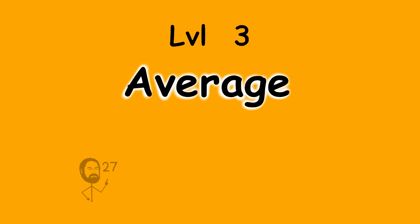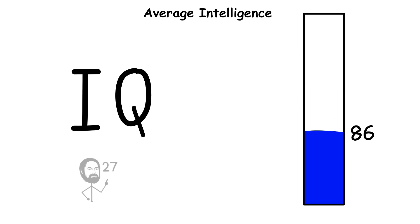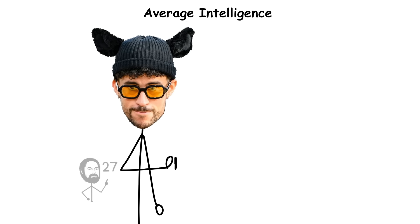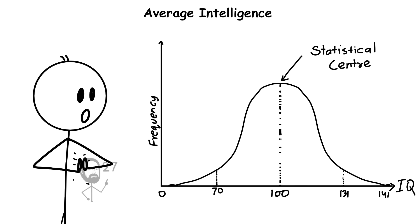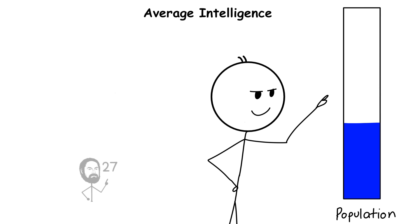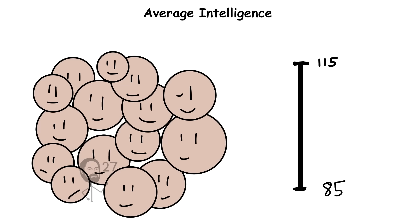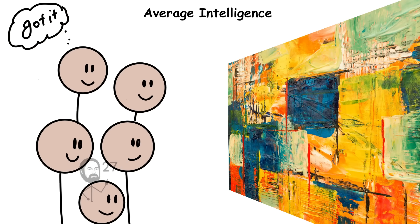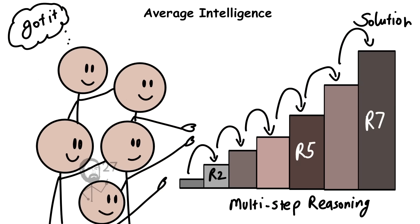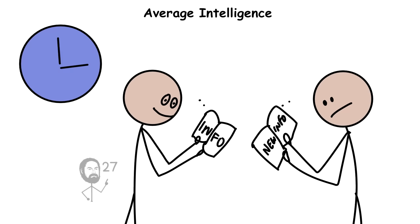Level 3. Average Intelligence IQ 86-115. An IQ between 86 and 115 represents the statistical center of human intelligence, the range where about 68% of the population falls. People within this range are capable of understanding most abstract ideas, following multi-step reasoning and learning new information at a typical pace.